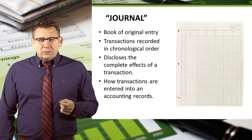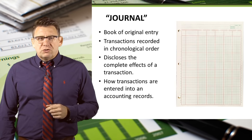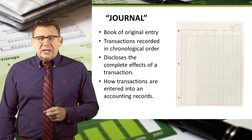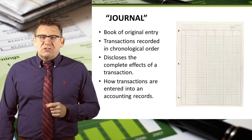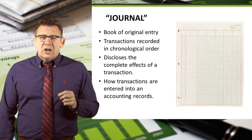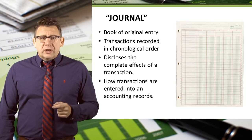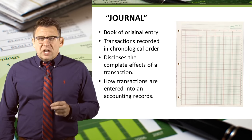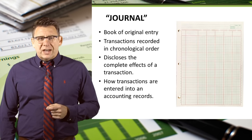The journal, sometimes called the book of original entry or more commonly the general journal, is how transactions are entered into accounting records. It is a chronological list of a company's transactions.